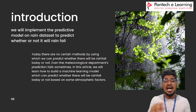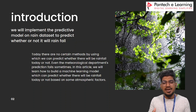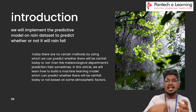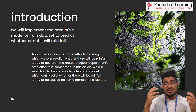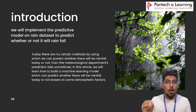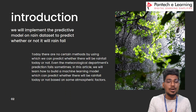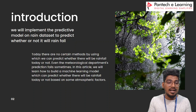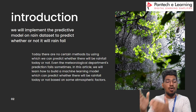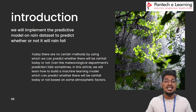There is no certain method by which we can predict whether the rain will fall today or not. Even a particular department tasked with predicting rainfall finds it not an easy task. But in this particular project, we will learn how to build a machine learning model which can predict, based on the weather condition, whether the rain will fall or not. Some atmospheric factors determine whether the rain will fall or not.